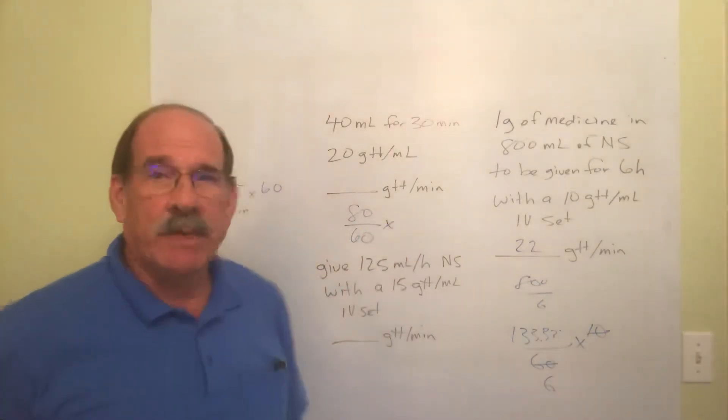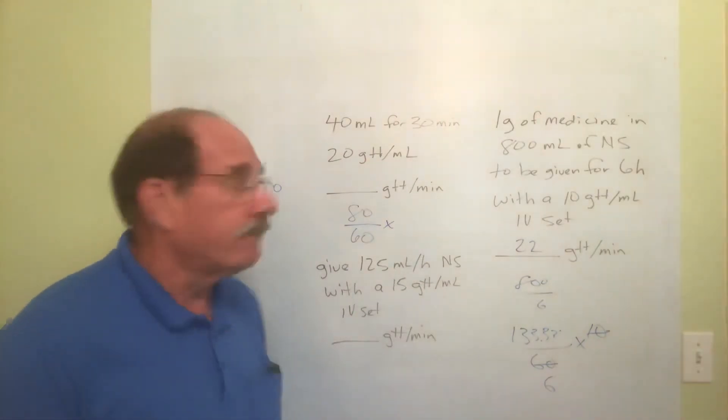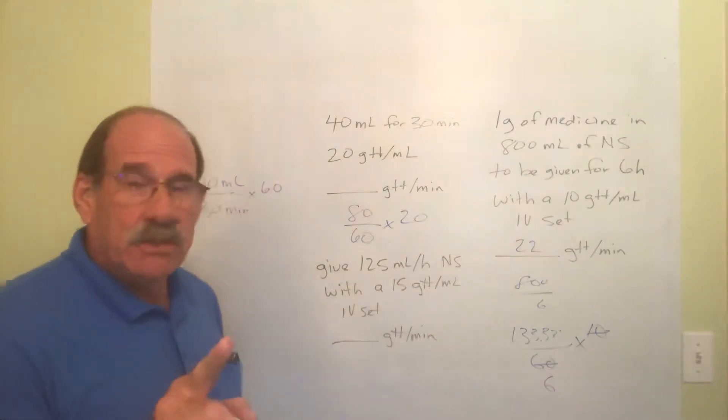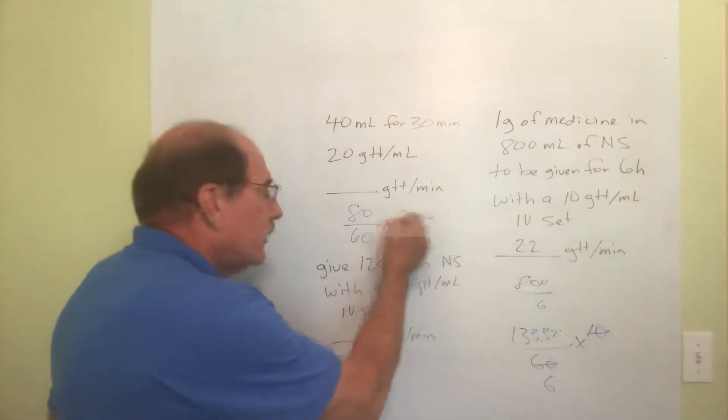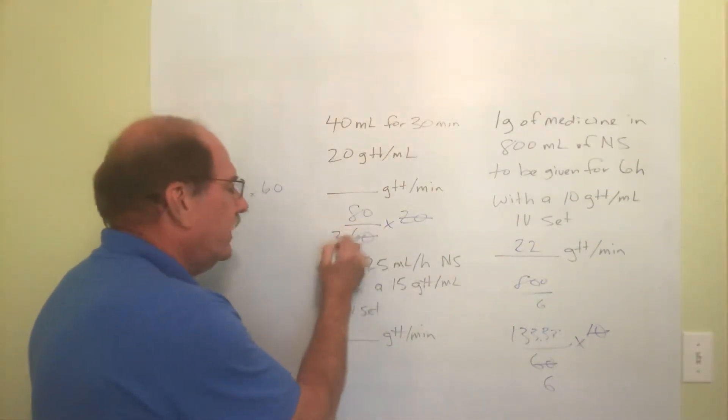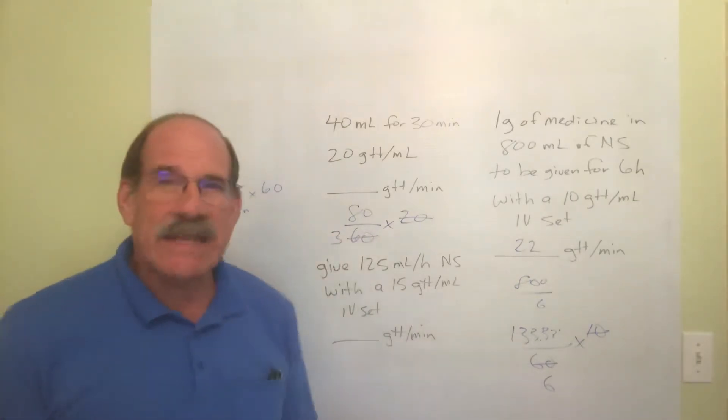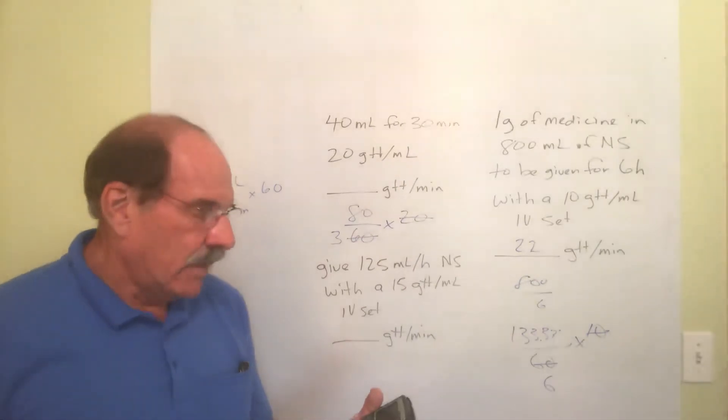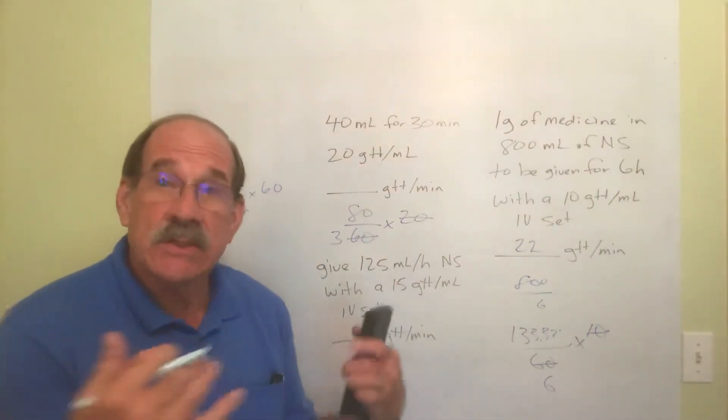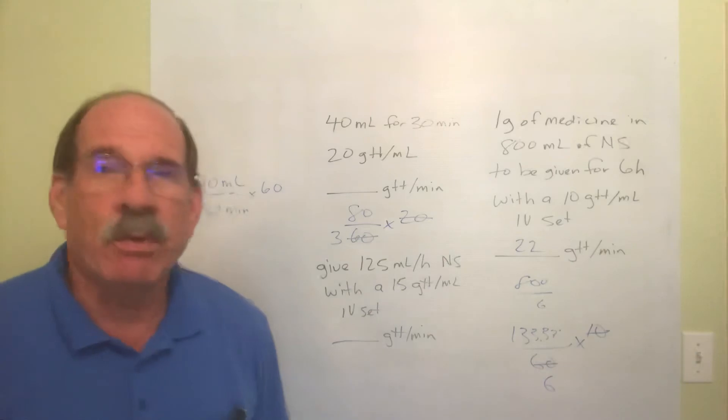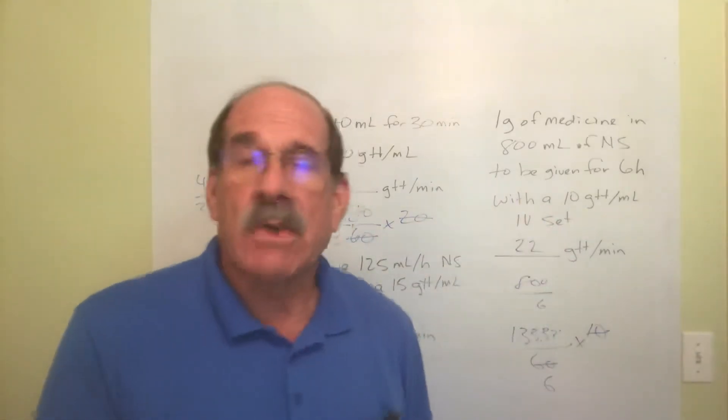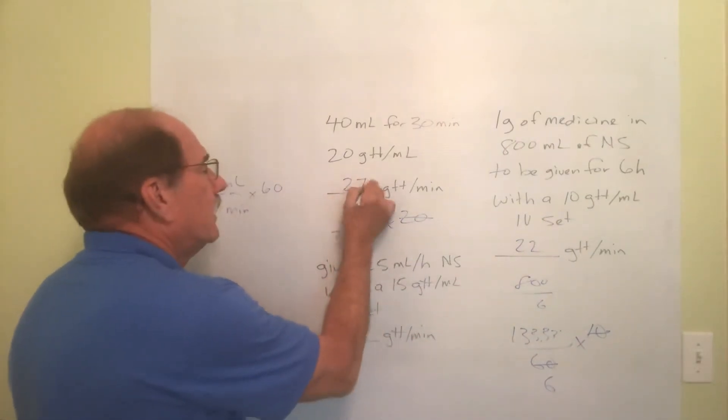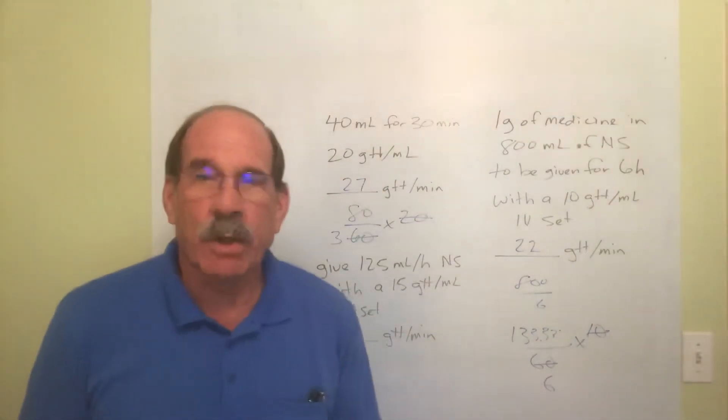What's the calibration, the drop factor? 20. I multiply by 20 - not really multiply by 20 because 20 goes into 60 three times. The only math I need to do is 80 divided by three, which is 26.666. 26.666 nearest whole number is 27. So I'm going to count 27 drops per minute.